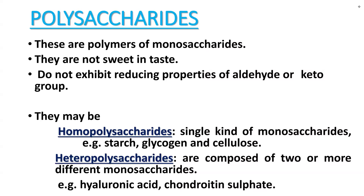Starch, glycogen, and cellulose are all made by thousands of glucose units — the same monosaccharide forms all of them. In heteropolysaccharides, two or more different monosaccharides join together. Examples include hyaluronic acid and chondroitin sulfates.